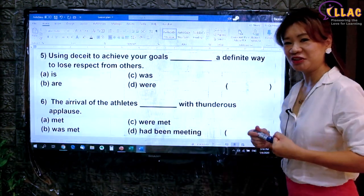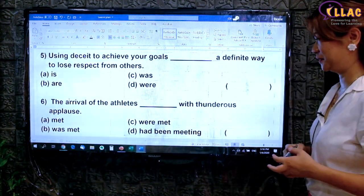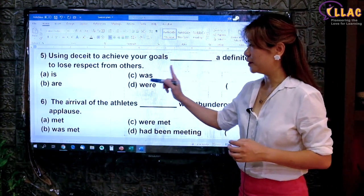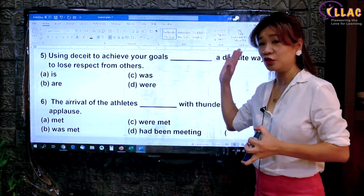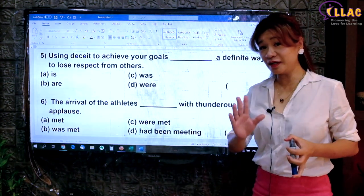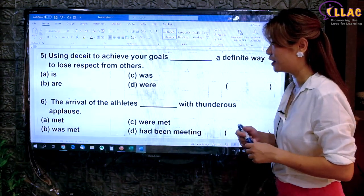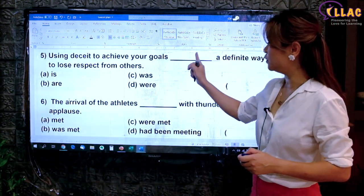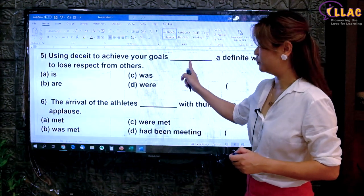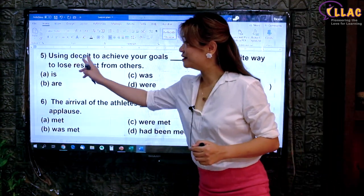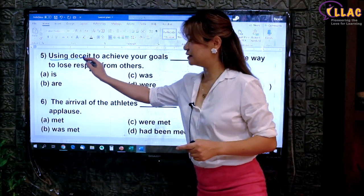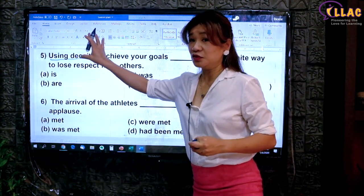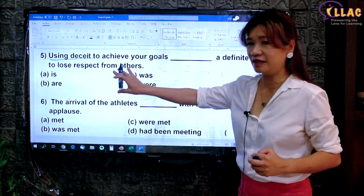Let's move on. You may pause the video to try questions 5 and 6. 'Using deceit to achieve your goals — a definite way to lose respect from others.' Sounds like a fact. If this is a factual statement, you use simple present tense. 'Using deceit to achieve your goals' is the subject. What is a definite way? Using deceit. You cannot count it — it's a concept, therefore singular. Singular subject, singular present tense verb. Answer A.